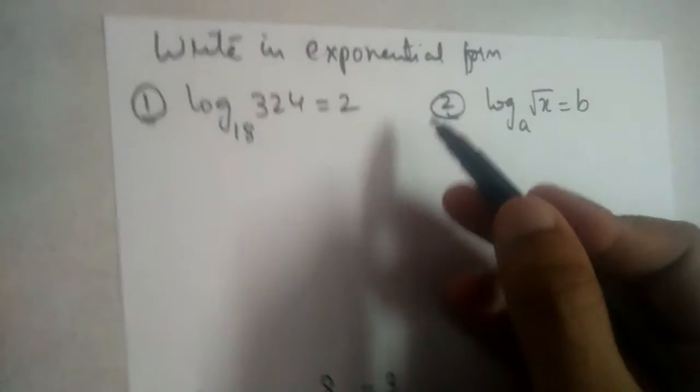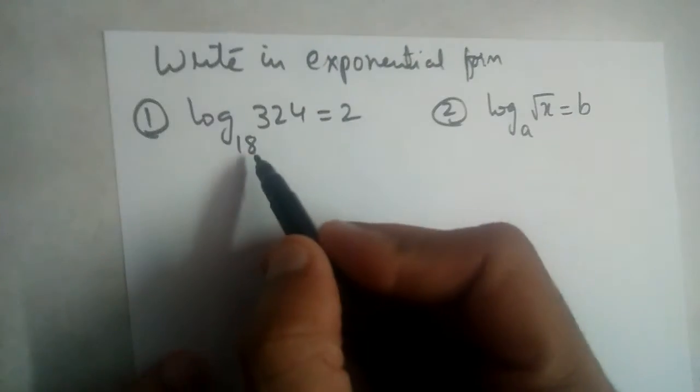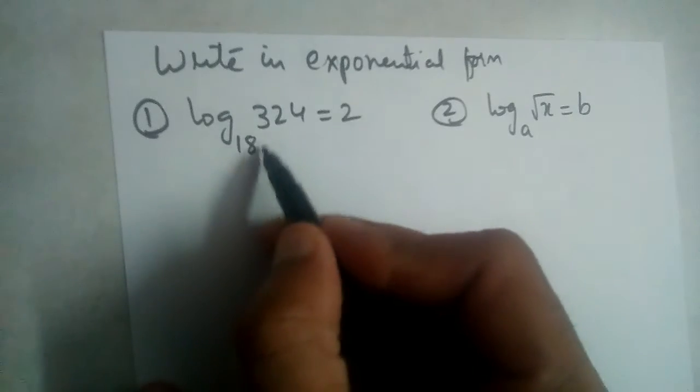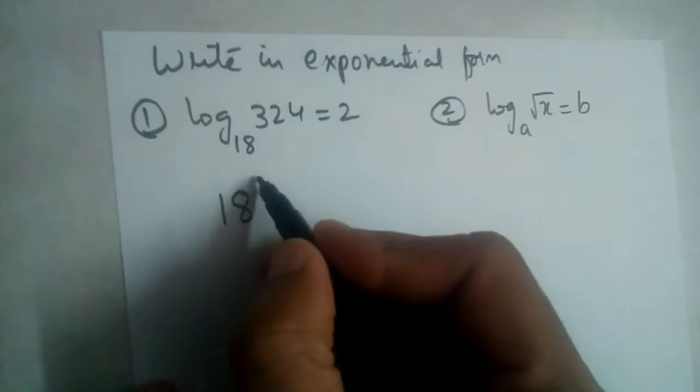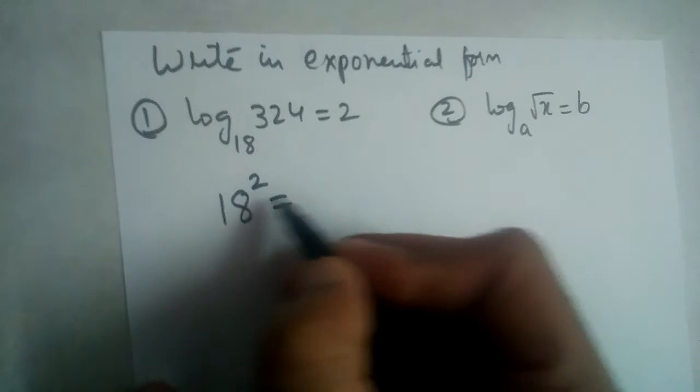Write in exponential form. So the base is 18 here, right? So 18 power 2, 18 squared.